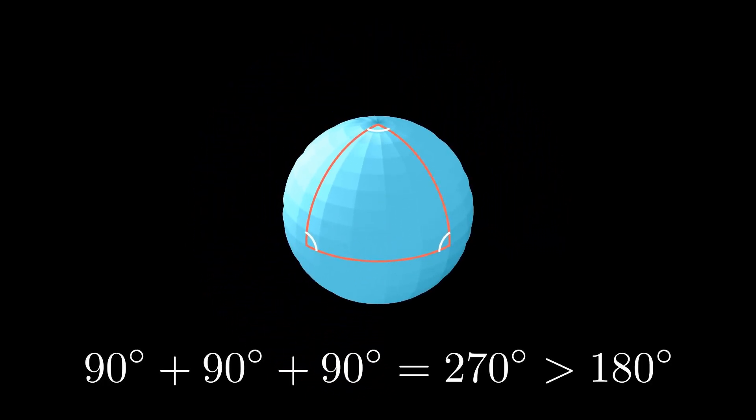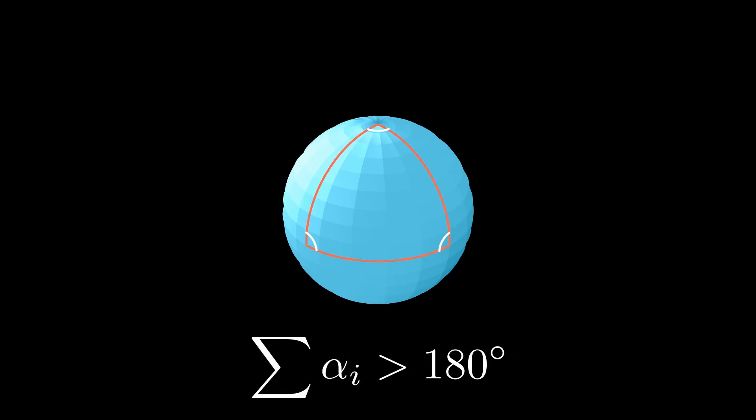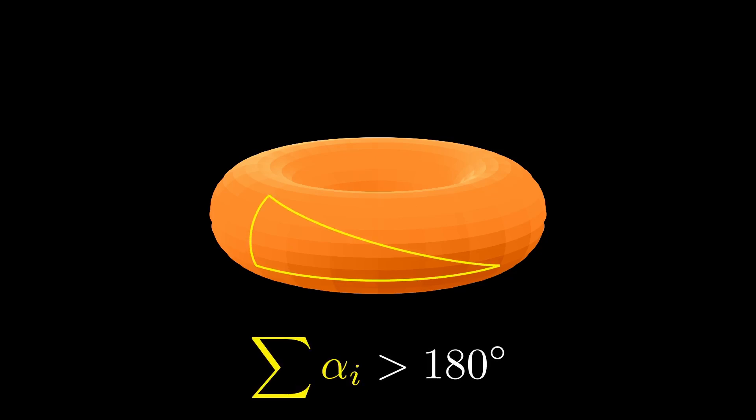But on a flat surface, the sum of a triangle's angles is exactly 180 degrees. This means that the surface cannot be flat. Now imagine standing on a giant torus. Once again, you can walk in straight lines to form a triangle, measure the angles, and find that their sum deviates from 180 degrees.